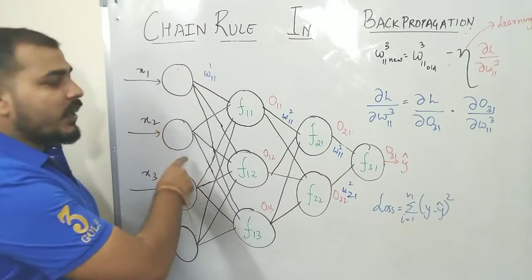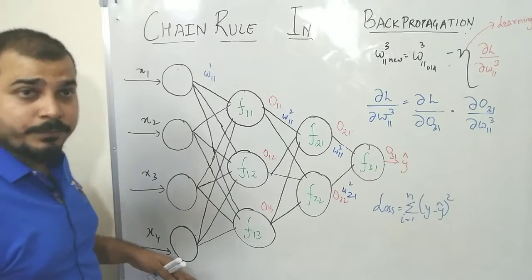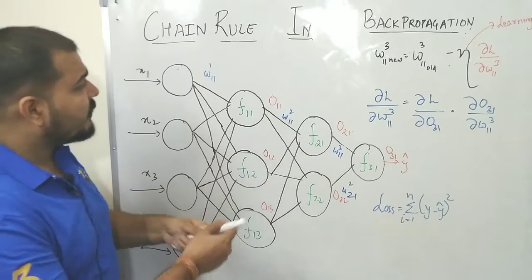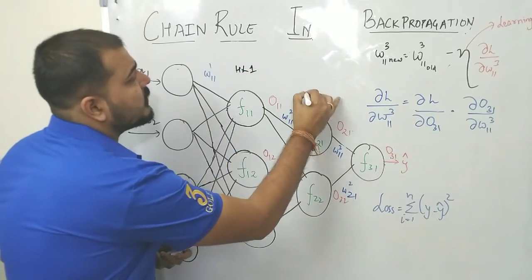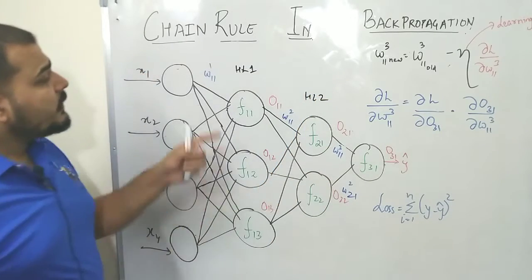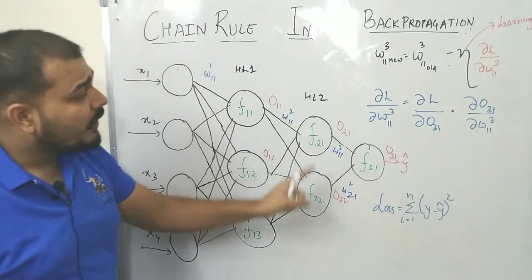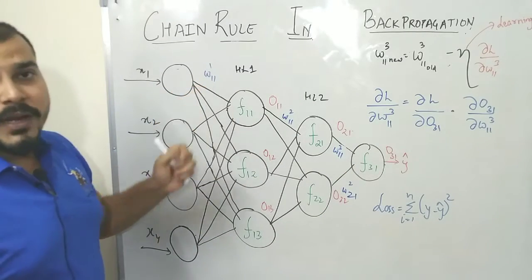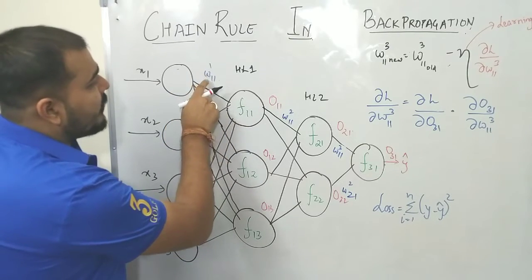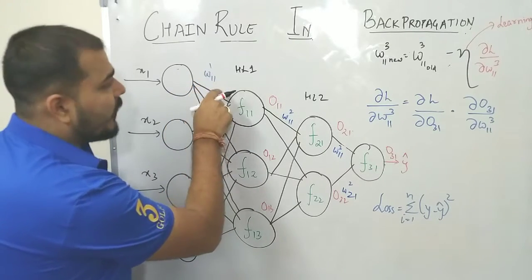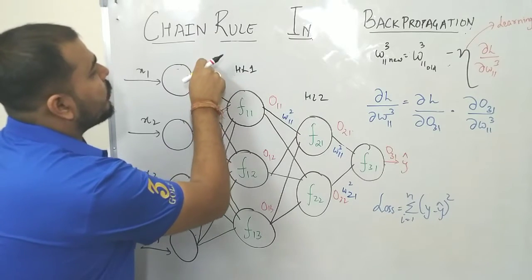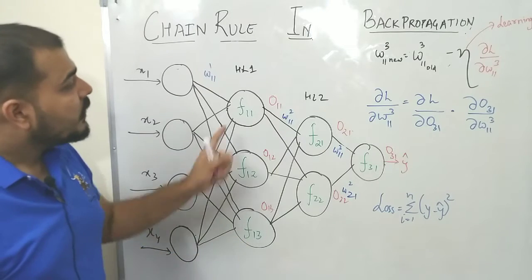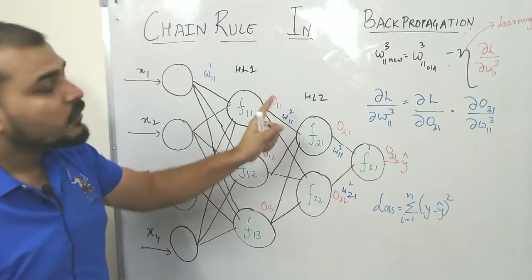Suppose this is my input — I have input features like x1, x2, x3, x4. These features are getting connected to two hidden layers: hidden layer 1 and hidden layer 2. In hidden layer 1 I have 3 neurons; in hidden layer 2 I have 2 neurons, and finally I have the output. The best way to define the weights is that for the first layer I write it as 1w11 with a suffix of 1, indicating these are the weights for the first hidden layer. Similarly for the second hidden layer you have w11 with a suffix of 2.